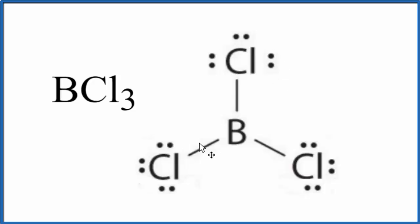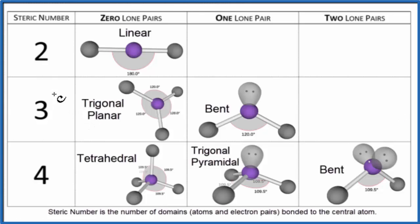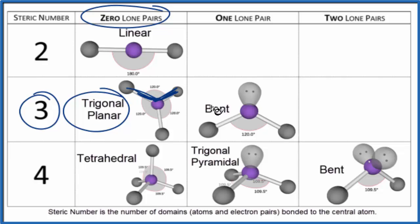So we have three things attached to the central boron with no lone pairs. So we could use this chart if we weren't able to visualize the molecular geometry. We have three things attached. That's the steric number, and we don't have any lone pairs. So that means we have the trigonal planar molecular geometry with a bond angle here of 120 degrees.